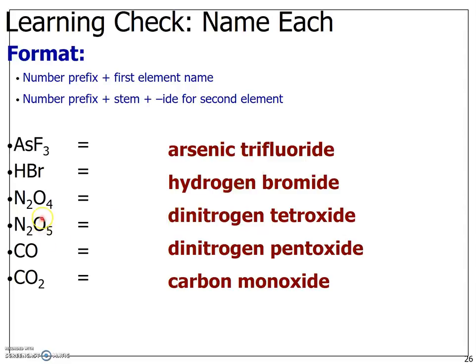Please note that when there is more than one of the beginning element, you do take into account the prefix. So in case of nitrogen, there are two nitrogens here, dinitrogen tetroxide. So you dropped the A and we kept the O just because it sounds nicer.